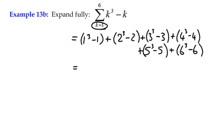And we can then simplify all that. 1 cubed minus 1 is just 0, isn't it? So we've got 0 there. 2 cubed minus 2, 8 minus 2 is 6. 27 subtract 3, plus 24.